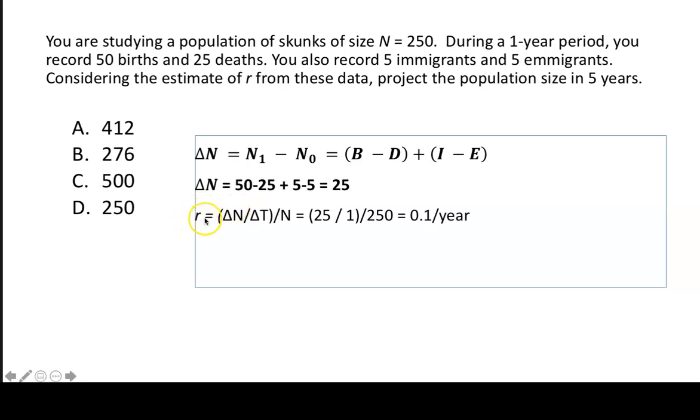Next we're looking at the per capita growth rate. So we have delta N, which we calculated, which is 25, over delta T. Delta T is one year period because that's what we measured in a one year period, the delta N over that one year period. And then divided by the initial population size. So that gives us 25 divided by 1, and all of that divided by 250, which equals 0.1 per year, which is the per capita growth rate.